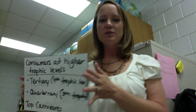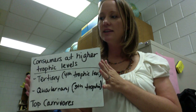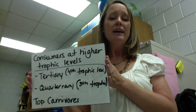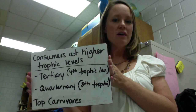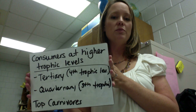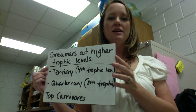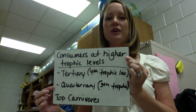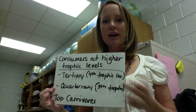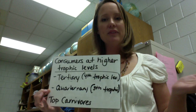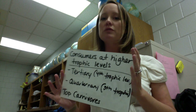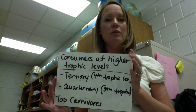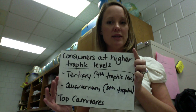We can also have consumers at higher trophic levels. If they are eating the secondary consumers, they are known as tertiary — that is the fourth trophic level. And occasionally, though it's pretty rare, a quaternary consumer would be the fifth trophic level. These tertiary and quaternary consumers are going to be your top carnivores — things like birds of prey and mountain lions. We have fewer of those organisms; those are the ones that are usually on the endangered list, and we'll talk about why in just a minute.